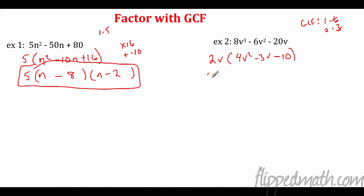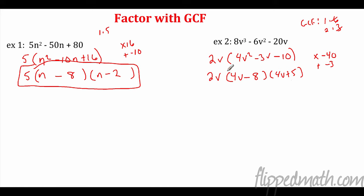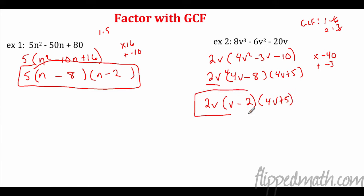Now I have to factor what's left if it's factorable. Four times negative 10 — I need two numbers that multiply to negative 40 and add to negative three. I'll put 4v in front of both factors. Negative eight and positive five multiply to negative 40 and add to negative three. There's a common factor of four here, so that gives (v − 2)(4v + 5). Remember the 2v from the initial step must be in the final answer. A lot of students ask if they need all three factors — yes, you do.